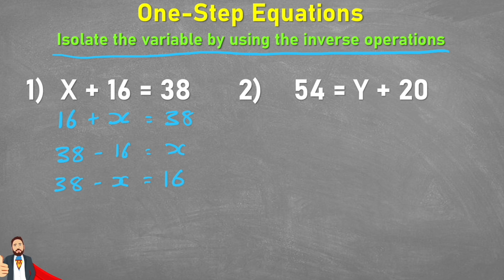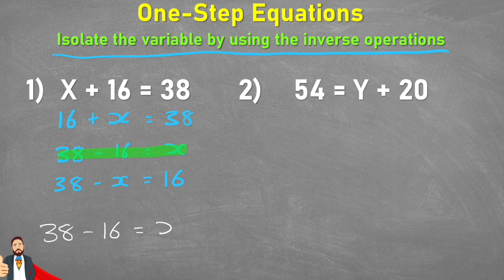How can we use this to help us? We are looking for the inverse — the opposite expression — which leaves the variable on its own. That would be: 38 subtract 16 equals x. So if we write it again: 38 minus 16 equals x, and 38 subtract 16 is 22, so x equals 22.